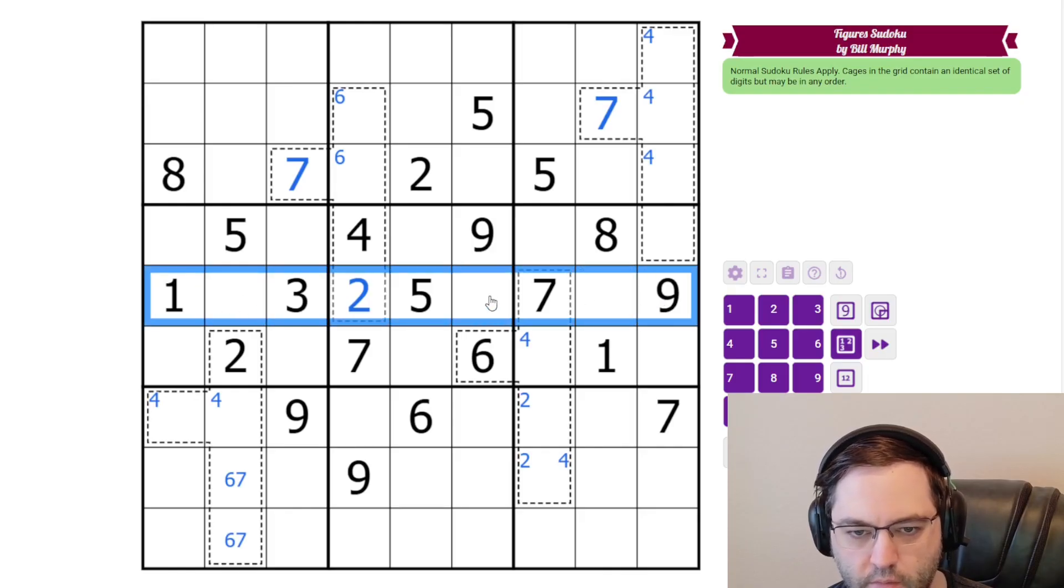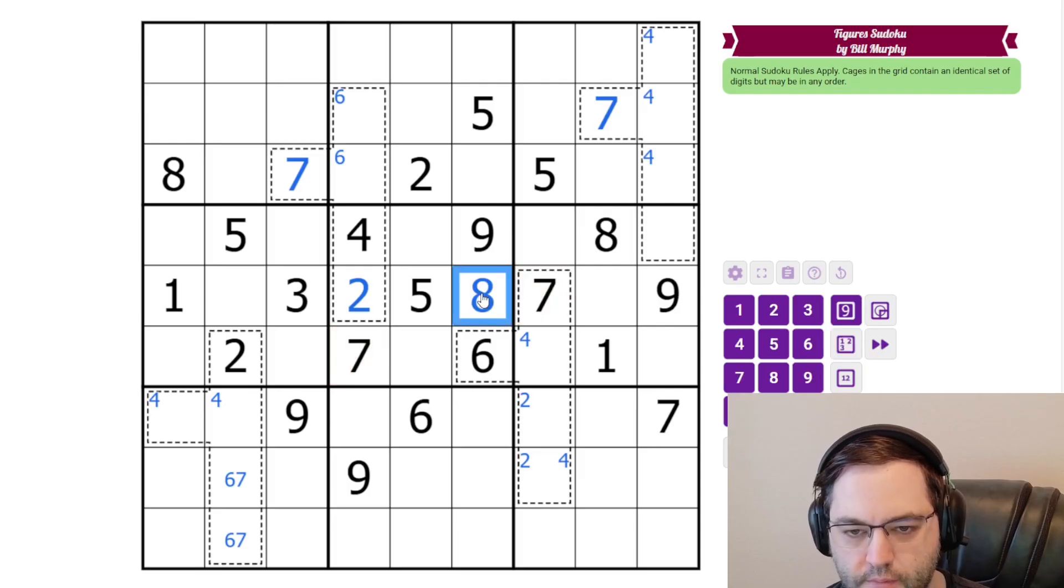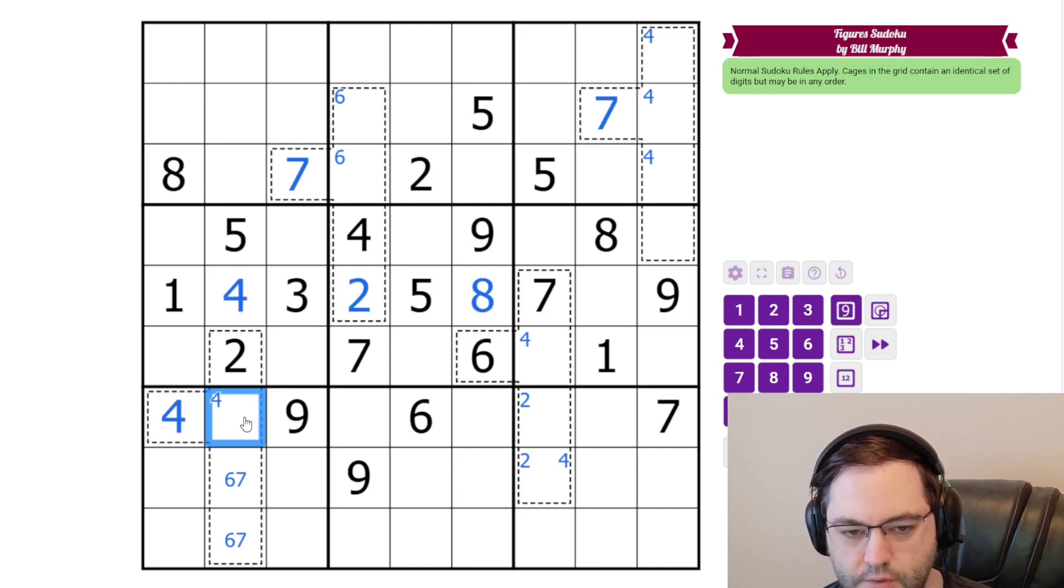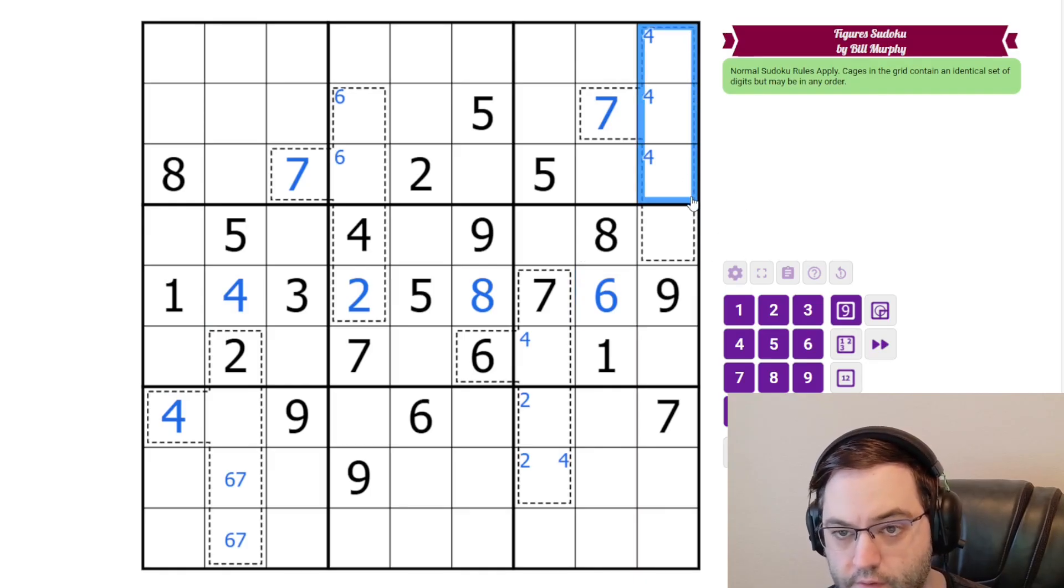All right, a little bit of Sudoku before we keep going. In this row, we just need the even digits. We have four and six here, so this must be the eight. And this is a four-six pair, but we have a six-seven here. So this is four, which makes that four. And this is six.